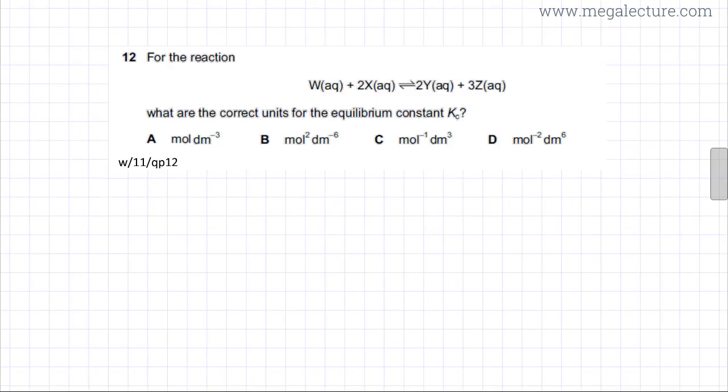The following past paper question is about finding the units for Kc. For the reaction, W(aq) + 2X(aq) ⟷ 2Y(aq) + 3Z(aq), what are the correct units for the equilibrium constant Kc?